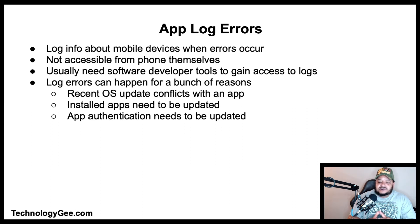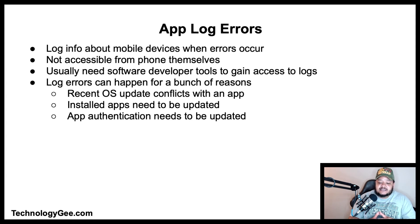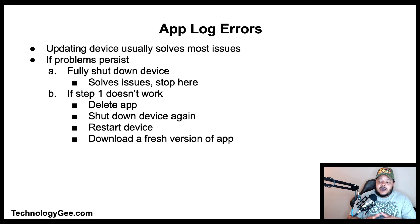App log errors are simply log information about the mobile device when errors occur, but are not accessible from the phone itself. Usually, gaining access to these logs requires the user to use software developer tools. App log errors can happen for numerous reasons, but some of the most common are: recent operating system update conflicts with an installed app, installed apps that need to be updated, and app authentication that needs to be updated.